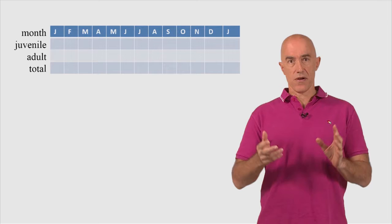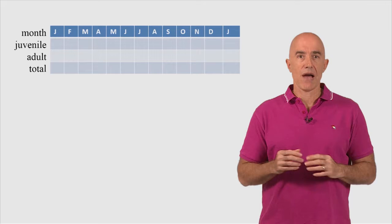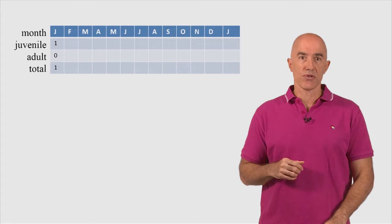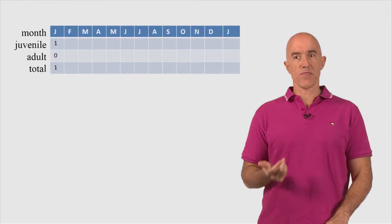So in the first month, let's say January 1st, we introduce one newborn rabbit pair into the population. So we have one juvenile, no adults, and one rabbit total.